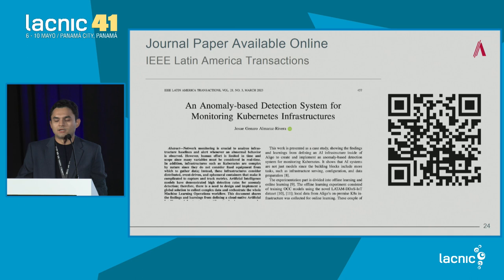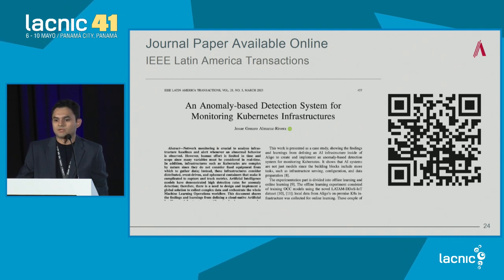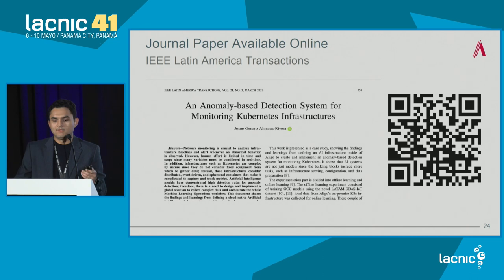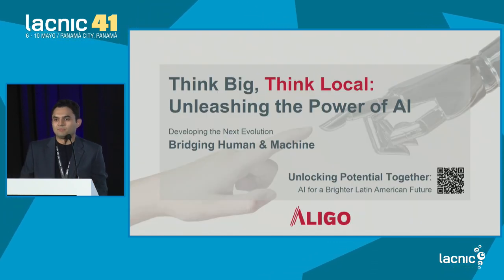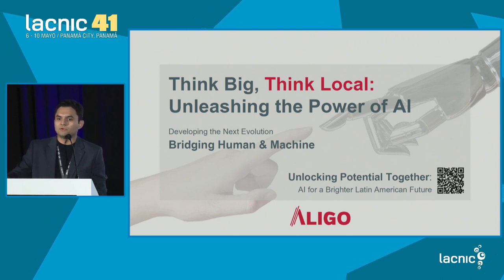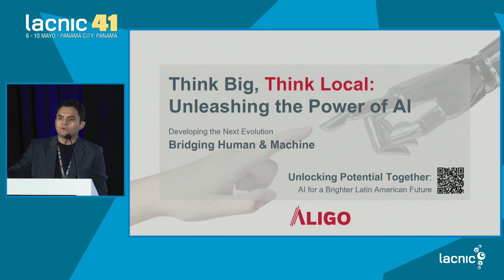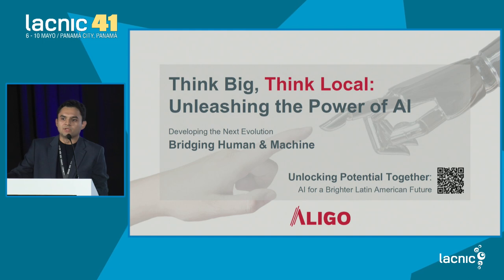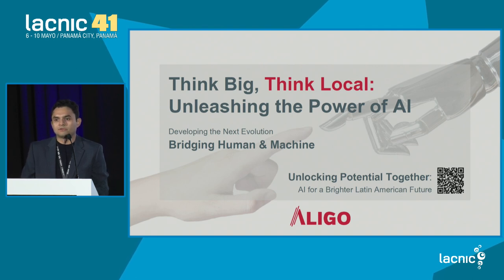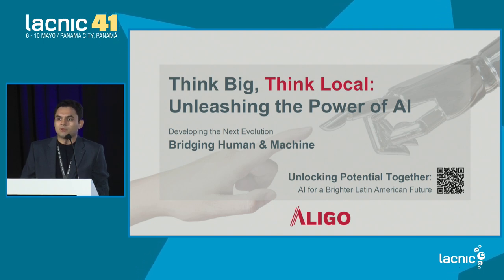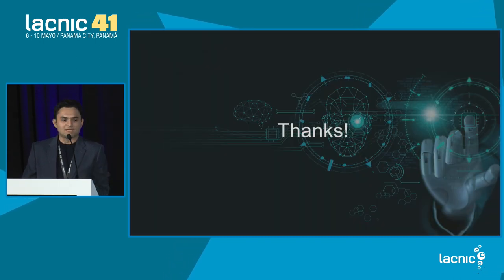All of this work is available in the Latin American Transactions Journal. You can scan the QR code to access it. The project also has an open source repository — you can find our code and experiments online. Since from the beginning we used open source technologies, we made ours open source as well. At Aligo, we are harnessing the power of AI for Latin America, bridging the gap between humans and machines.